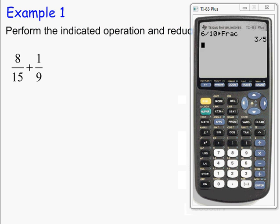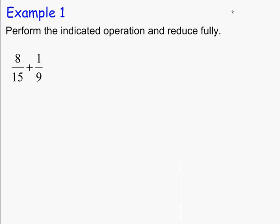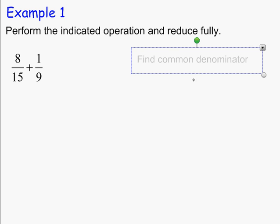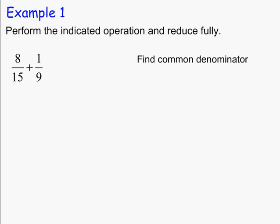For our first example, perform the indicated operation and reduce fully. Here we are adding 2 fractions: 8 fifteenths and 1 ninth. To add fractions, you need a common denominator — you must have a common denominator. The number in the denominator position must be the same for both fractions in order to add, and also to subtract.